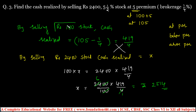The main point: always calculate out of 100 stock. Because of the 5 premium, 5 is added. Because we are selling, brokerage is subtracted. So cash realized by selling 2400 stock is rupees 2514.